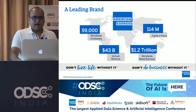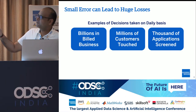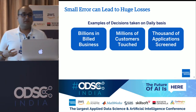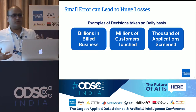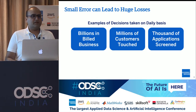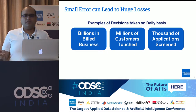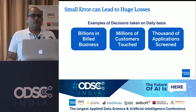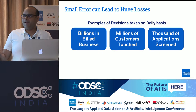Why is data quality so important to us? On a daily basis, we are making decisions on billions of dollars in billed business. We are touching millions of customers every day, and processing thousands of new account applications for our cards and products. When you visit a merchant and swipe your card, your expectation is that within a second or two you get a decision — most likely an approval. But what you don't observe is that behind every such decision, we have close to 10,000 variables and 4,000+ rules playing a role.